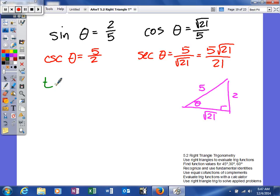Once we have our triangle created, it's real easy for us to figure out what our tangent is. We would say the tangent of our angle would be the opposite side over the adjacent, which would rationalize to 2 square root of 21 over 21. And then, we could find our cotangent, of course, by taking the reciprocal of that, square root of 21 over 2.